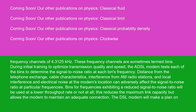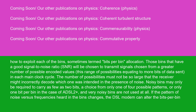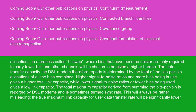This reduces the maximum link capacity, but allows the modem to maintain an adequate connection. The DSL modem will make a plan on how to exploit each of the bins, sometimes termed bits-per-bin allocation. Those bins that have a good signal-to-noise ratio, SNR, will be chosen to transmit signals chosen from a greater number of possible encoded values, equating to more bits of data sent in each main clock cycle. The number of possibilities must not be so large that the receiver might incorrectly decode which one was intended in the presence of noise. Noisy bins may only be required to carry as few as two bits, or only one bit per bin in the case of ADSL2+, and very noisy bins are not used at all. If the pattern of noise versus frequencies changes, the DSL modem can alter the bits-per-bin allocations in a process called bit swap, where noisier bins carry fewer bits and other channels are given a higher burden.